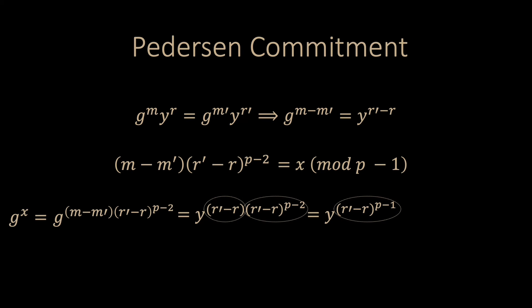Now we simply multiply the r' minus r expression, and we get in the exponent r' minus r to the power p minus 1. According to the Little Fermat theorem, this exponent is exactly 1 for a prime p, and as such the expression simplifies to y.